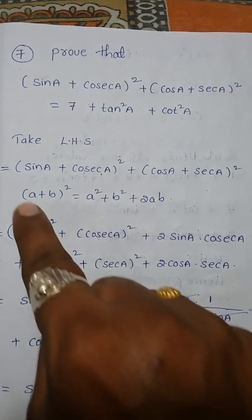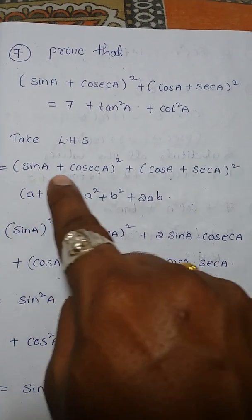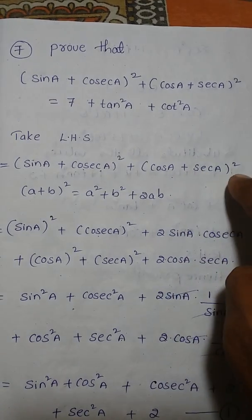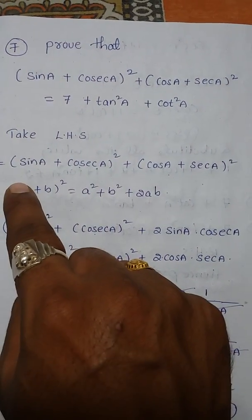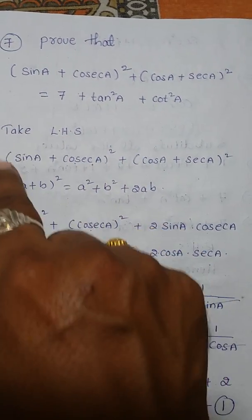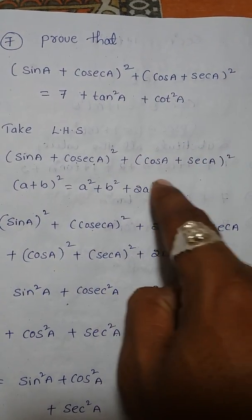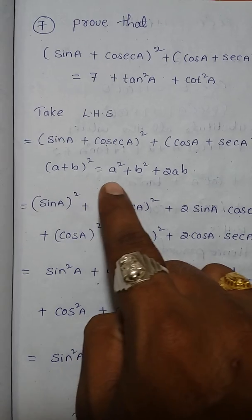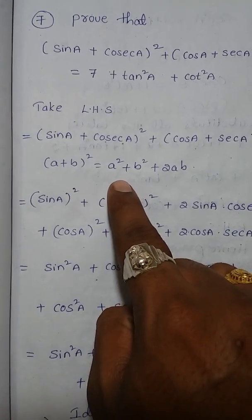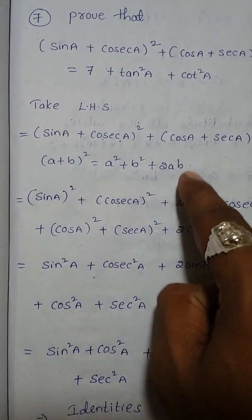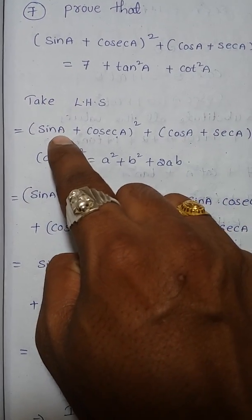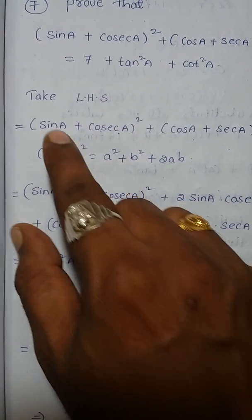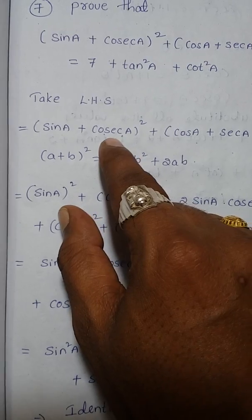The left-hand side is (sin A + cosec A)² + (cos A + secant A)². This is in the form (a + b)², and the second term is also in the form (a + b)². The formula for (a + b)² is a² + b² + 2ab.